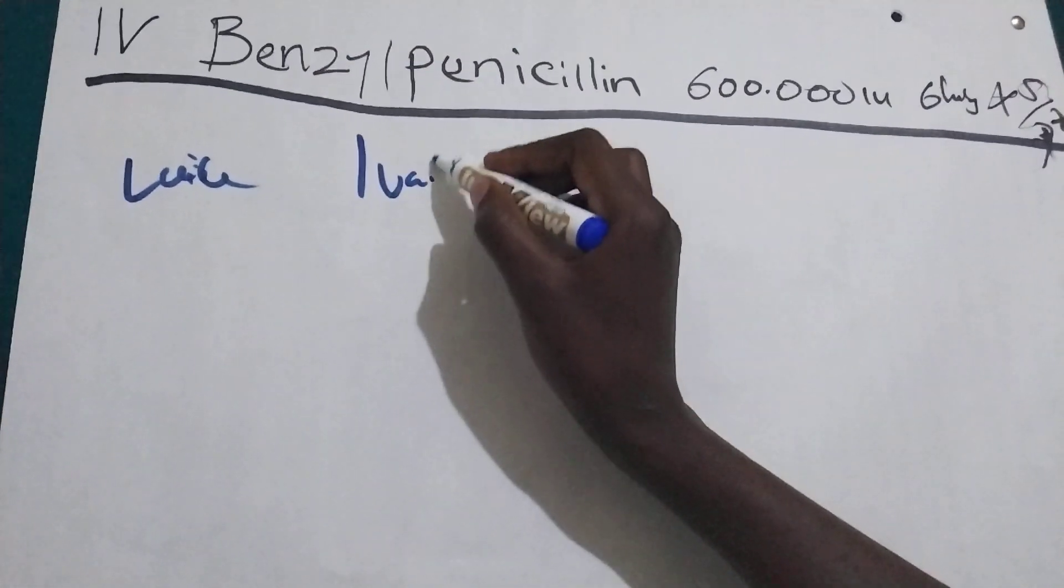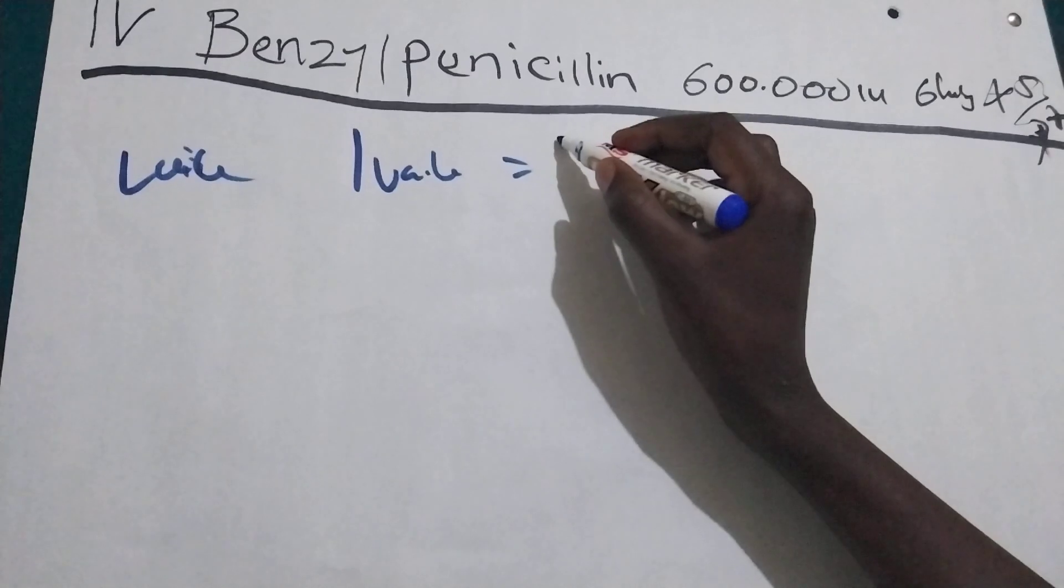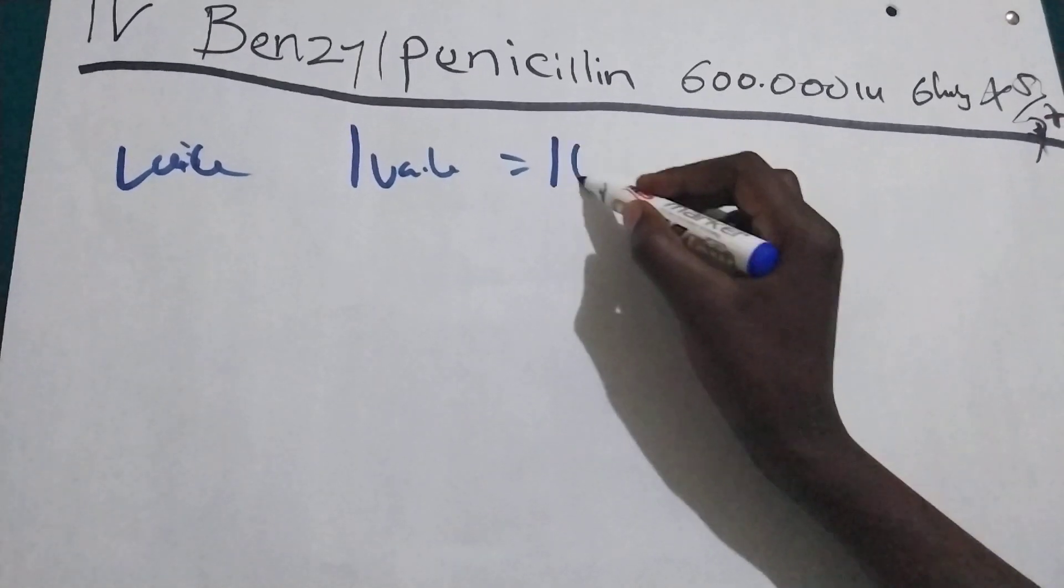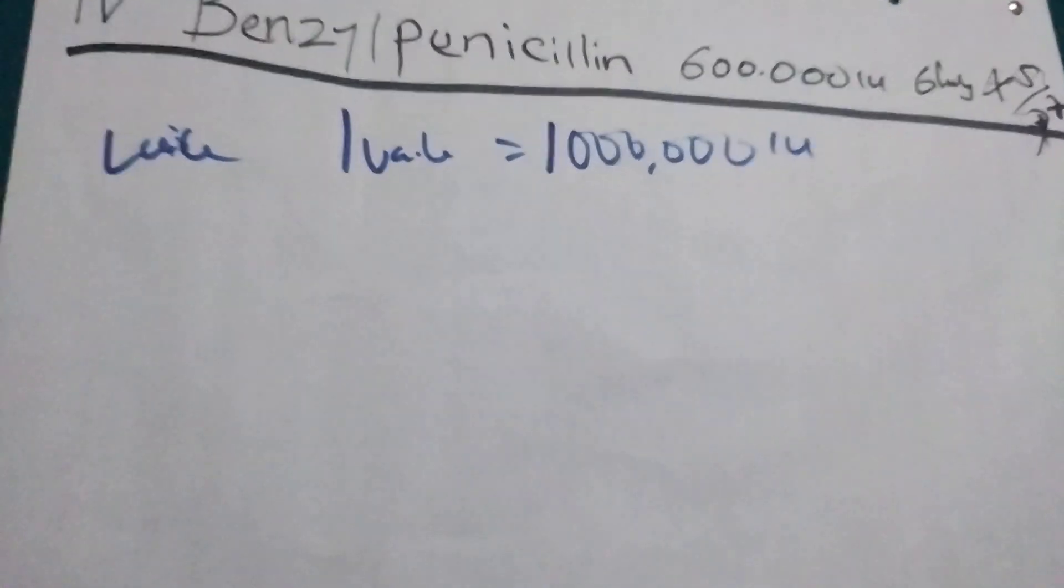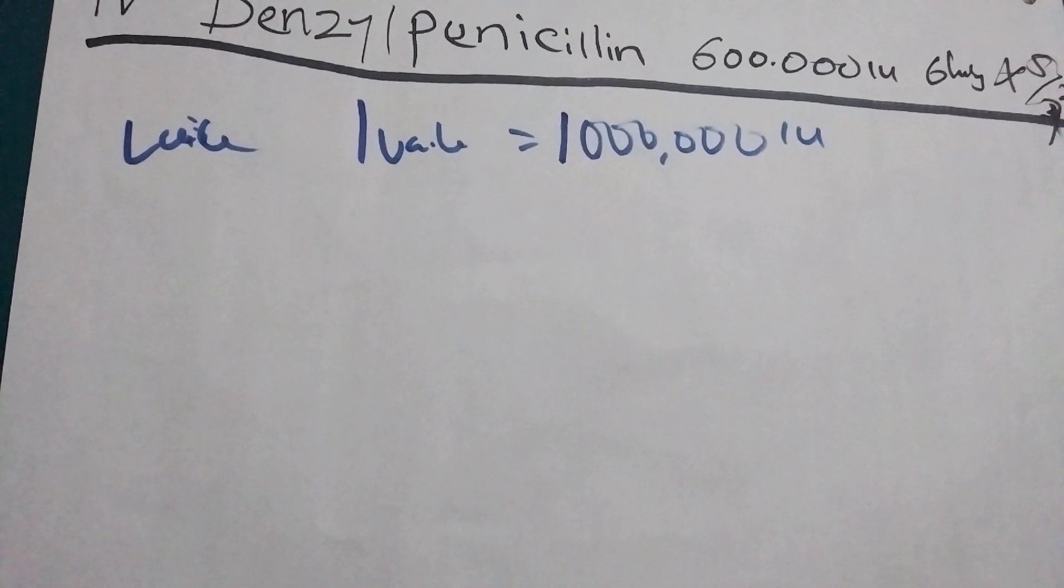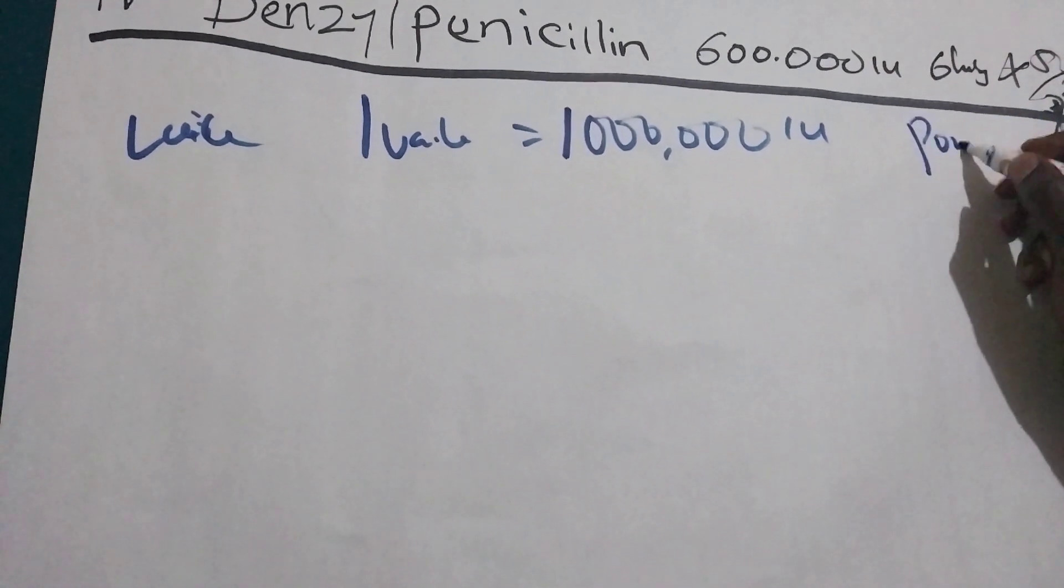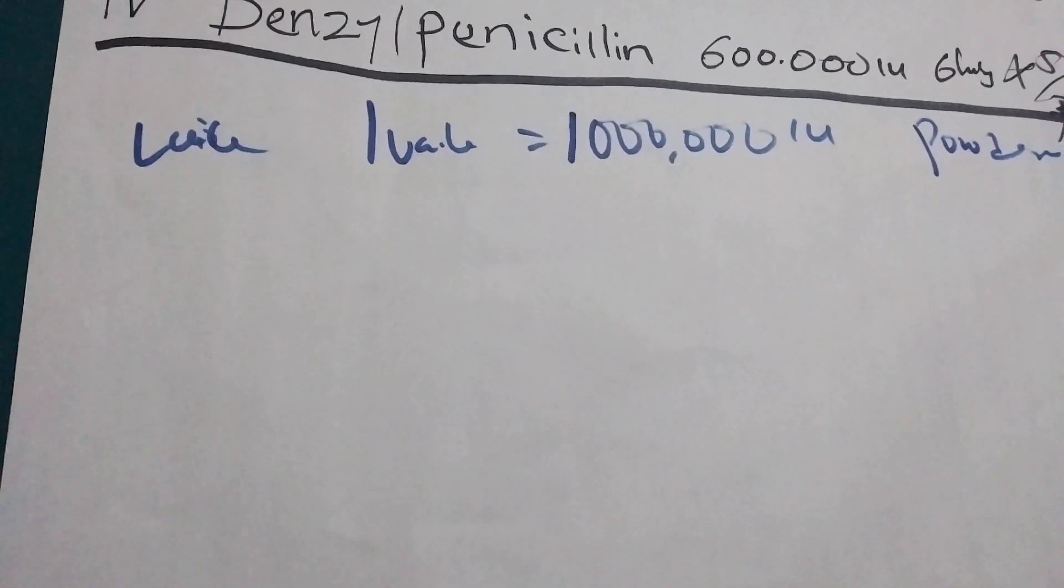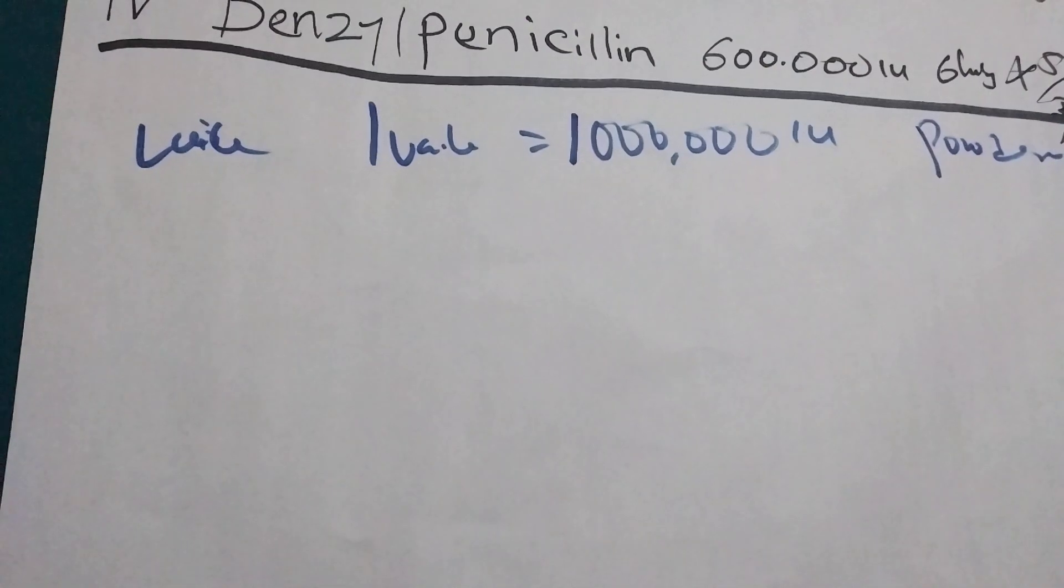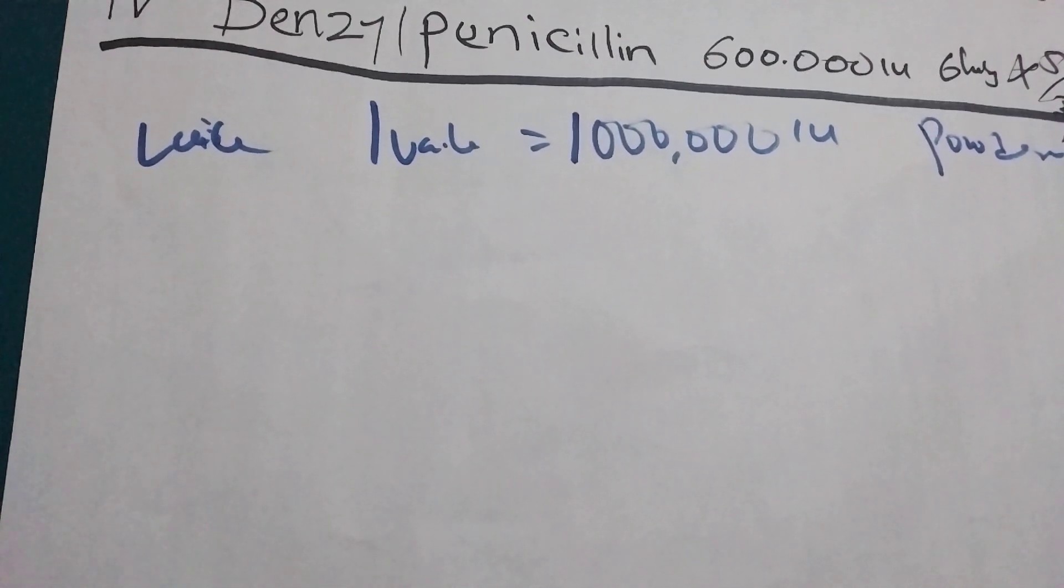One vial is equal to one million international unit and is in powder form. So what we are going to do, we are first going to dilute this drug. If we dilute, we are going to calculate and then we are going to give to this person.